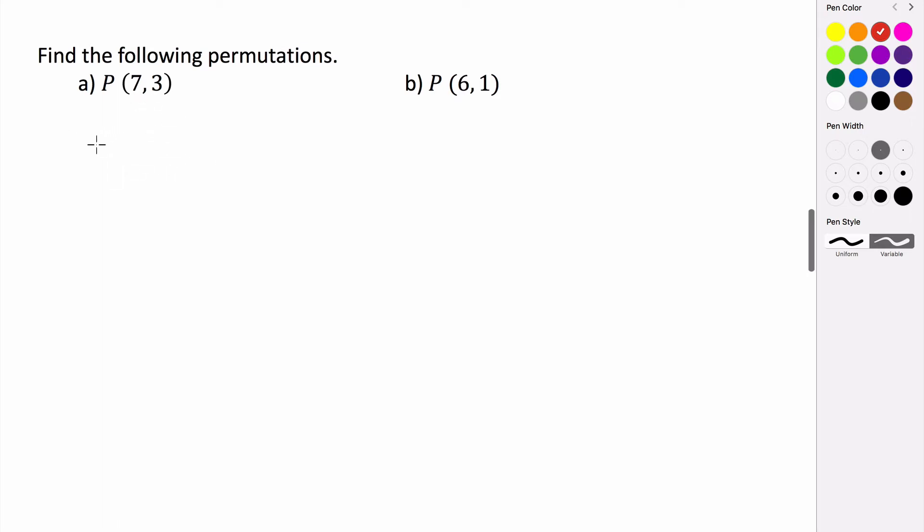If we use the permutation formula, P(7,3) is equal to... In the numerator of your fraction goes the first number, 7 factorial.